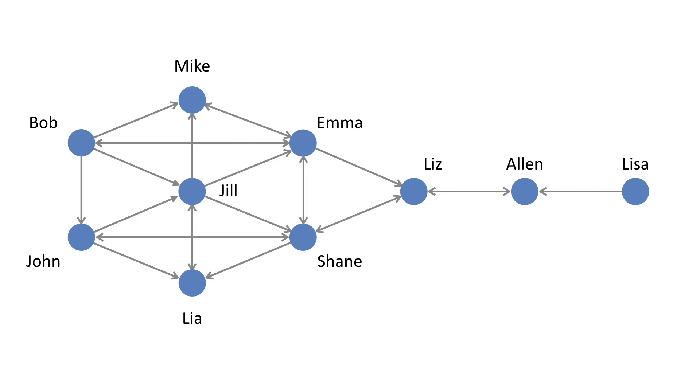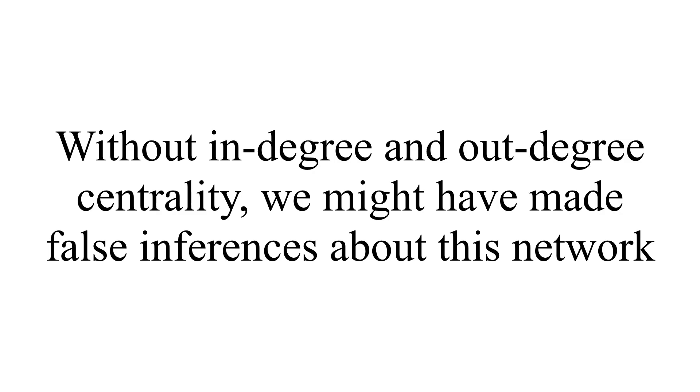If we compare centrality measures, our overall degree centrality shows more out-degree activity and Jill as central. But without directionality in the network, we wouldn't be able to tell the difference between how many ties someone is receiving versus sending out, and we might make false inferences — concluding Jill is the most important node. If we think that receiving ties is important as a marker of status or prestige, then we need that in-degree story.